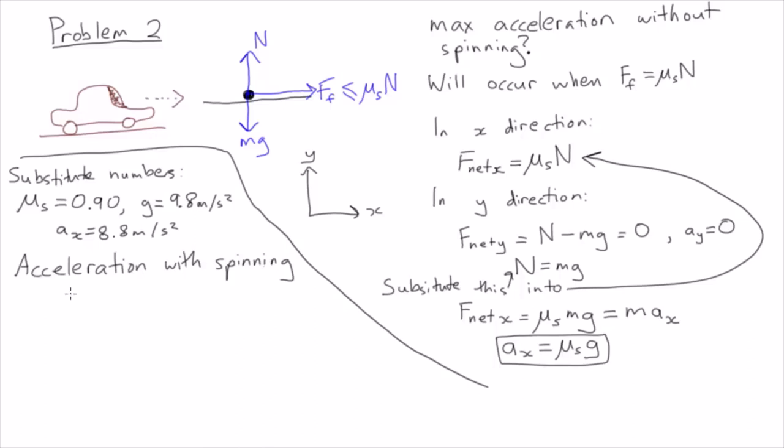Basically, all the forces are the same, so we can just replace the μs with μk. For a standard car, μk is around 0.7, so this gives us a smaller acceleration, 6.9 metres per second squared. So it's definitely less effective to accelerate when you spin the tyres.